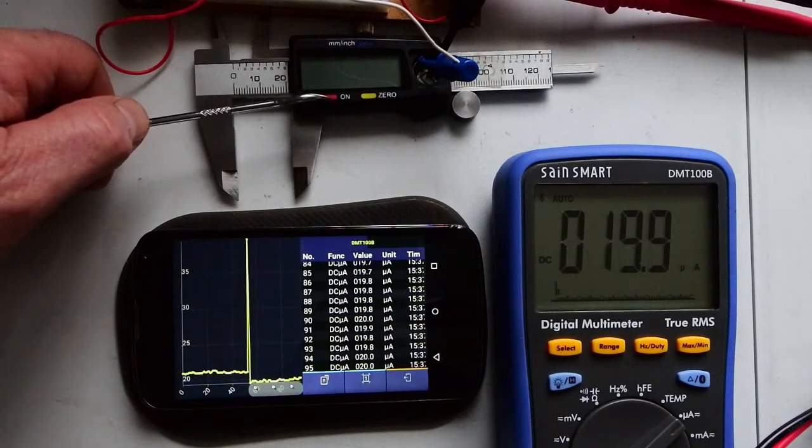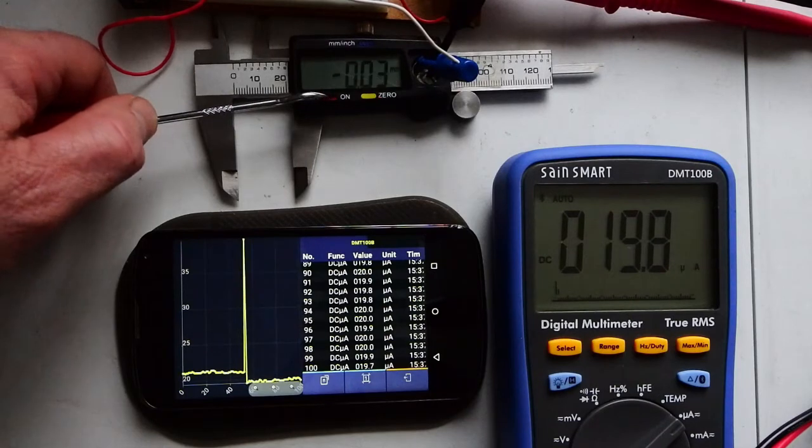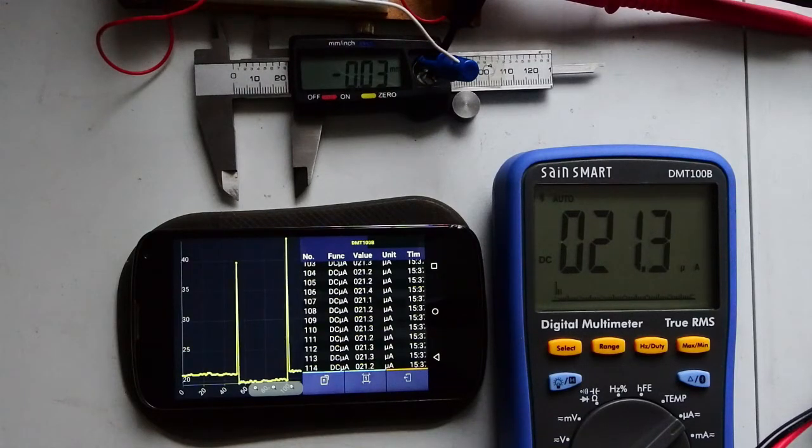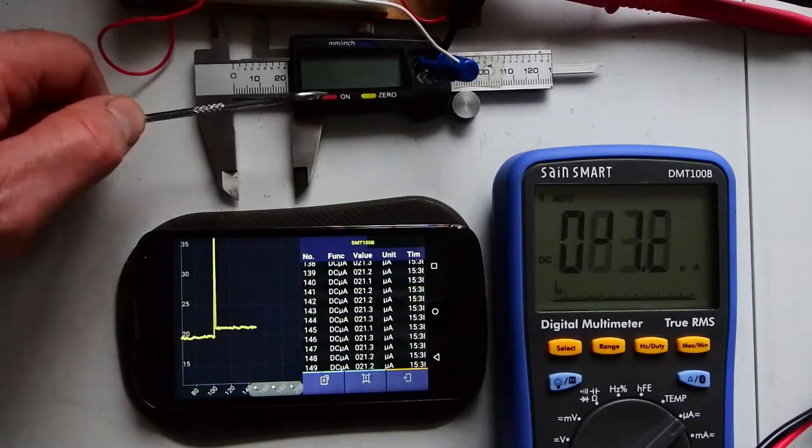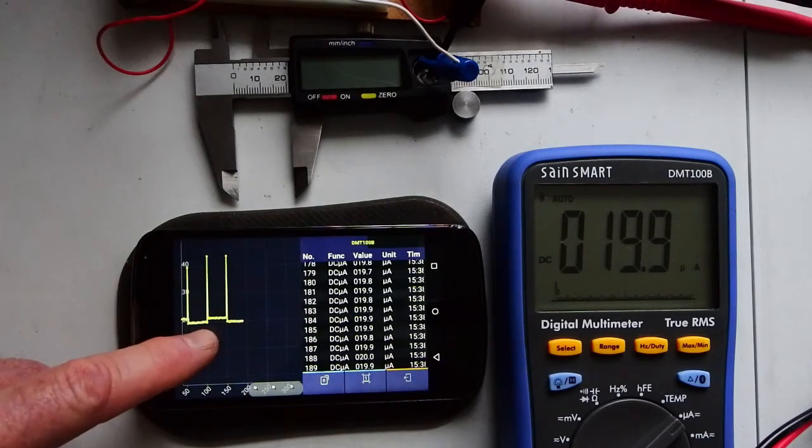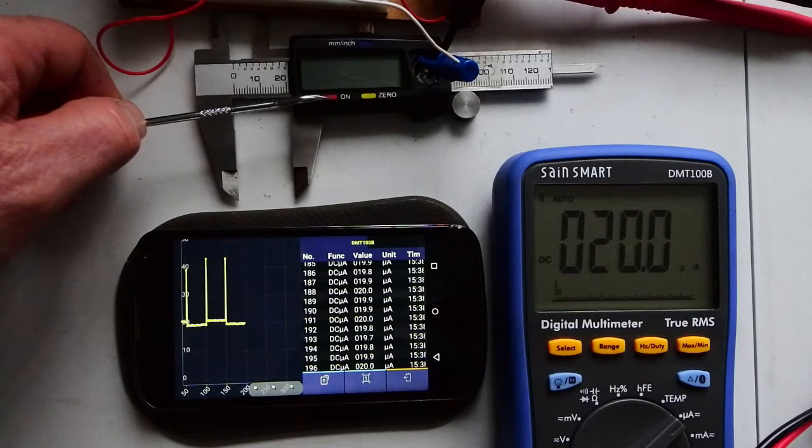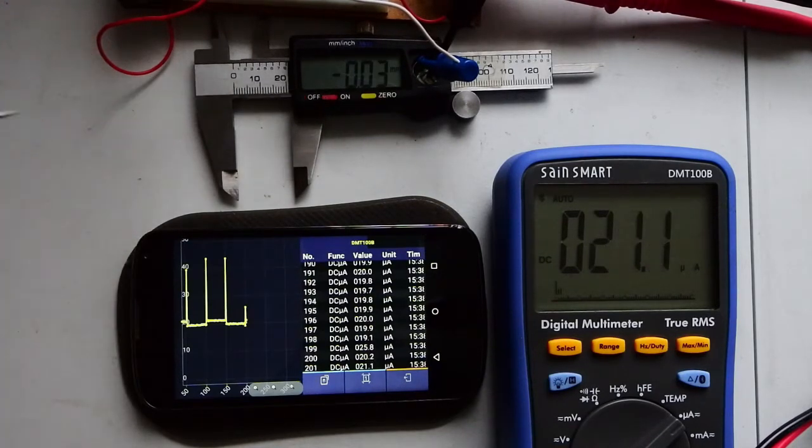Put the calipers back on again, a big spike and 21, sometimes creeping up to 22. So I kind of rescaled the chart there to show the true level of the current consumption against zero. Those calipers are pulling 21 or 20 microamps all the time, whether they're switched on or whether they're switched off. They are not ever switched off.